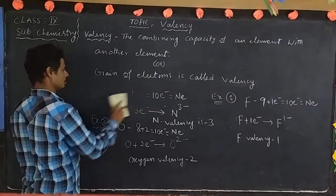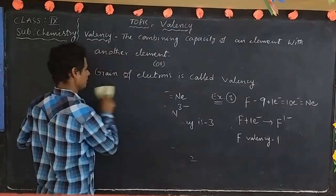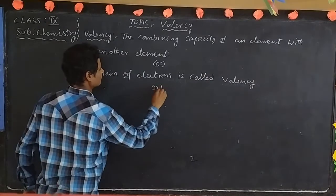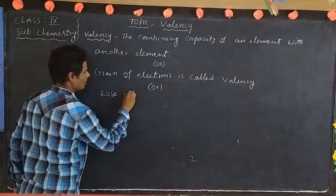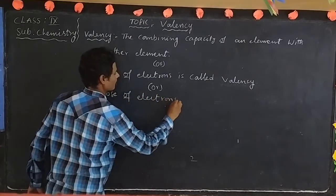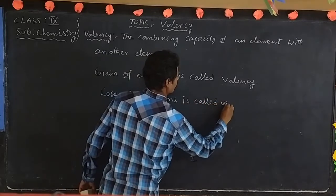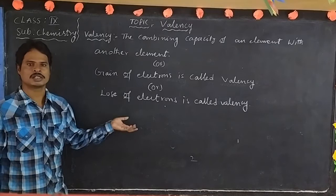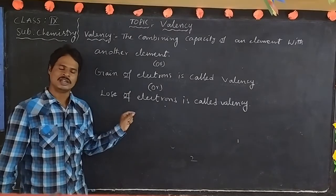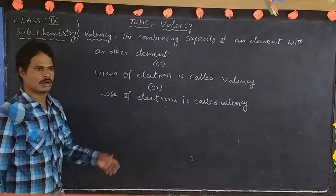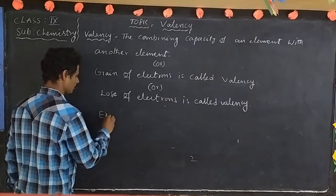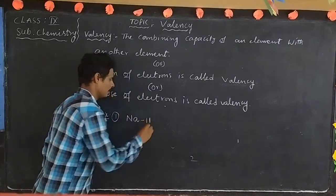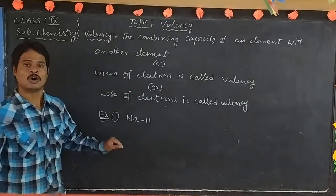Third definition: loss of electrons is called valency. An atom loses electrons to get the nearest inert gas electronic configuration. Example one: sodium, atomic number 11. How many electrons does sodium lose?